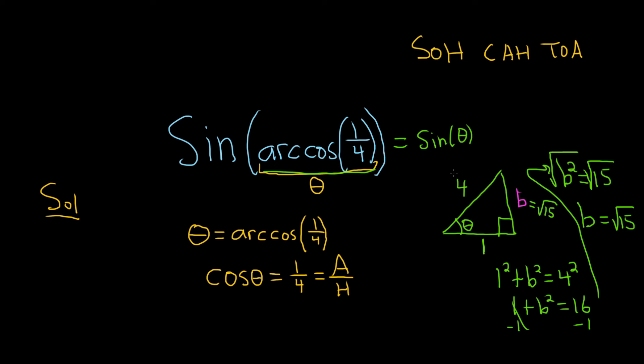So it's opposite over hypotenuse. So the opposite is 4. Whoops. Opposite. The opposite is the square root of 15. Opposite the angle, right? And then the hypotenuse is 4. Really bad place to mess up. So it's opposite over hypotenuse. I hope this video has been helpful.